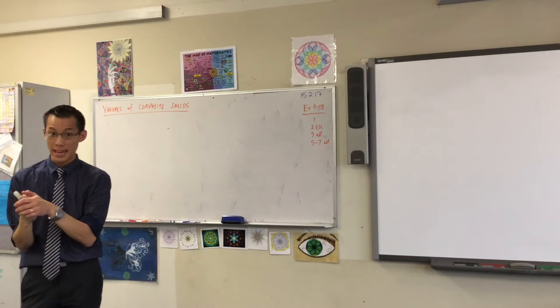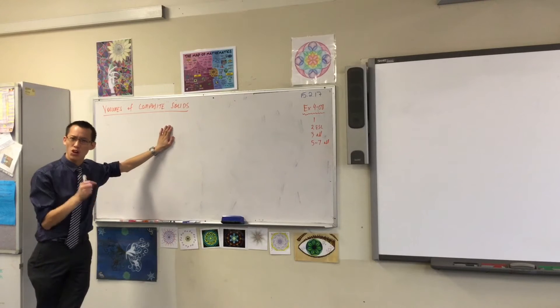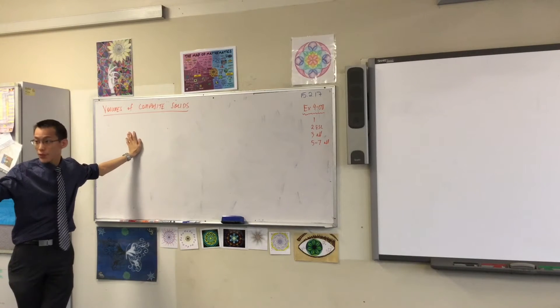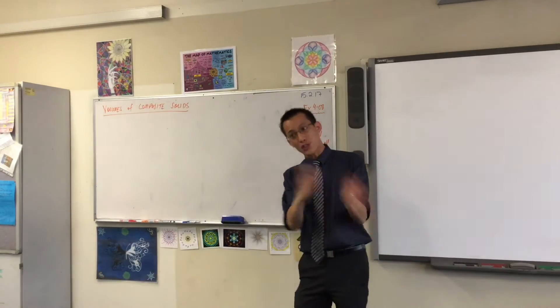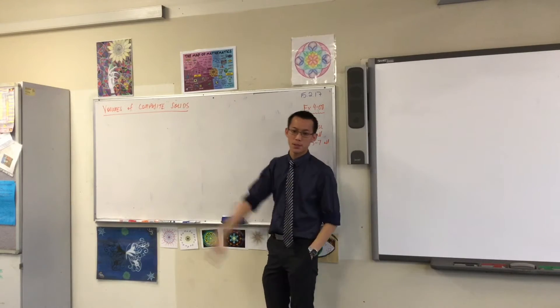Like I said, we're almost at the end now. Composite solids. We've looked at composite solids in this topic already, but we weren't looking at volume, we were looking at surface area. Now what I'd like you to do is just put your finger or your pen in the current page where you're at, and then just turn back to where we did surface area of composite solids.